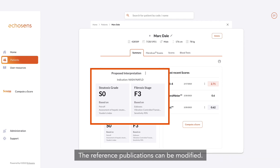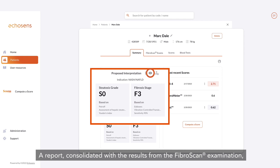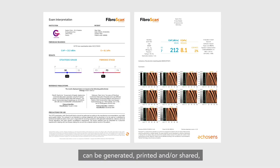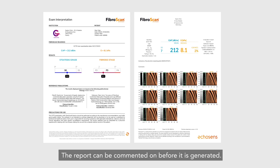The reference publications can be modified. A report, consolidated with the results from the FibroScan examination, can be generated, printed, and/or shared, and will be automatically saved in the patient's file. The report can be commented on before it is generated.